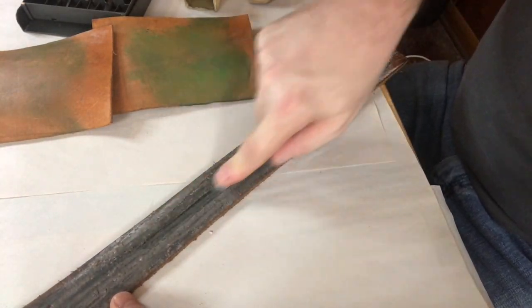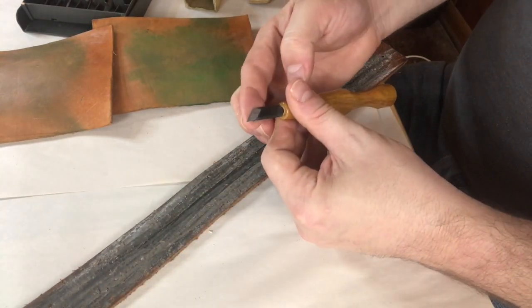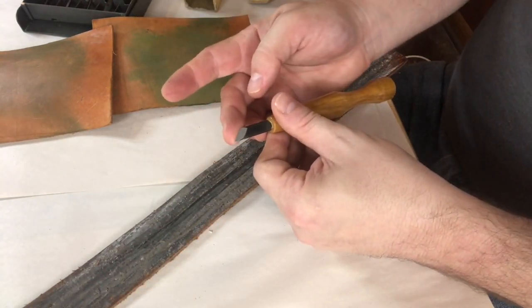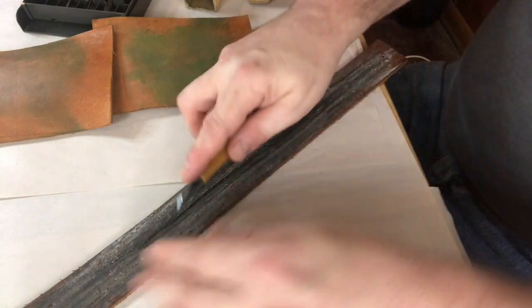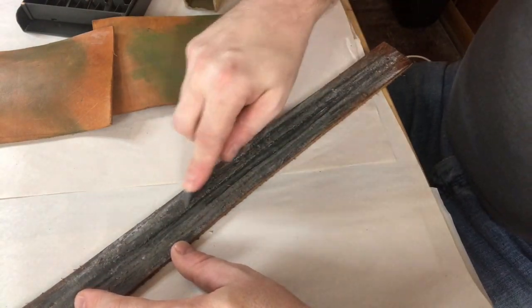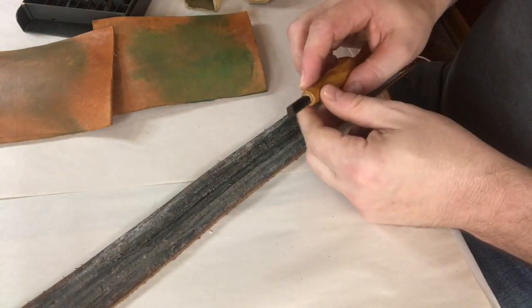What you'll do is lay it face down and then draw backwards, drawing towards yourself. If you go forwards, you're just going to cut the leather. So draw backwards, applying pressure as you go. You might touch up the back side just a hair.